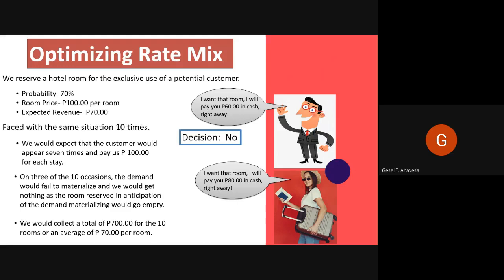To use a common term, this is the difference between the bird in the hand — the 60 pesos offered by the guest — and the bird in the bush, which is our 100 pesos rate. How about the second customer offering 80 pesos? The decision is yes, because the expected revenue of 80 pesos is greater than the expected value of the potential 100 pesos customer. Over 10 occurrences, we would get 800 pesos versus the 700 pesos we would get by saying no and holding out for the 100 pesos guest.